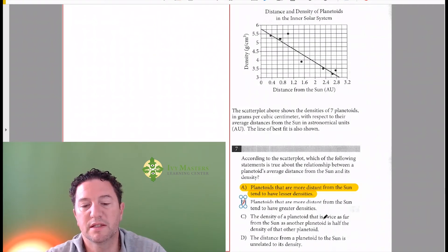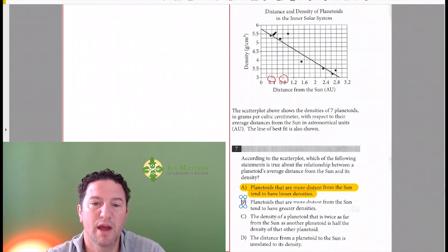Answer choice C: The density of a planetoid that is twice as far from the sun—so let's say 0.4 to 0.8, that would be twice the distance—is half of the density of another planetoid. So is it half of the density? It looks like it's around 5.4 and it drops to around 5. That's not half the density. C is wrong.